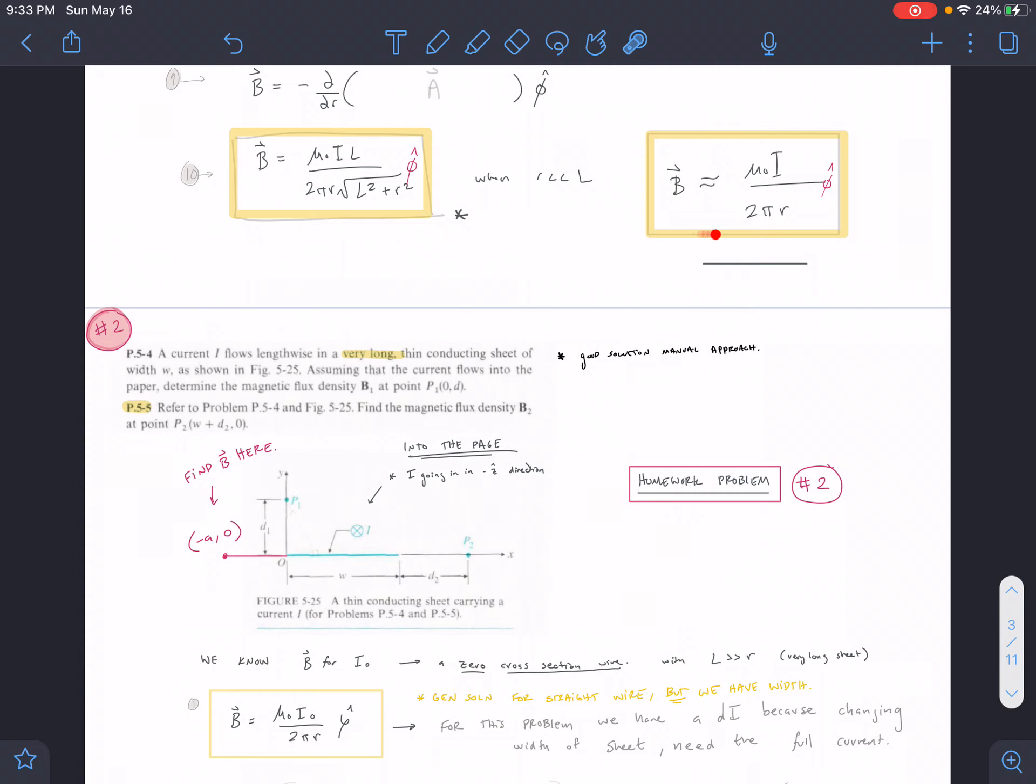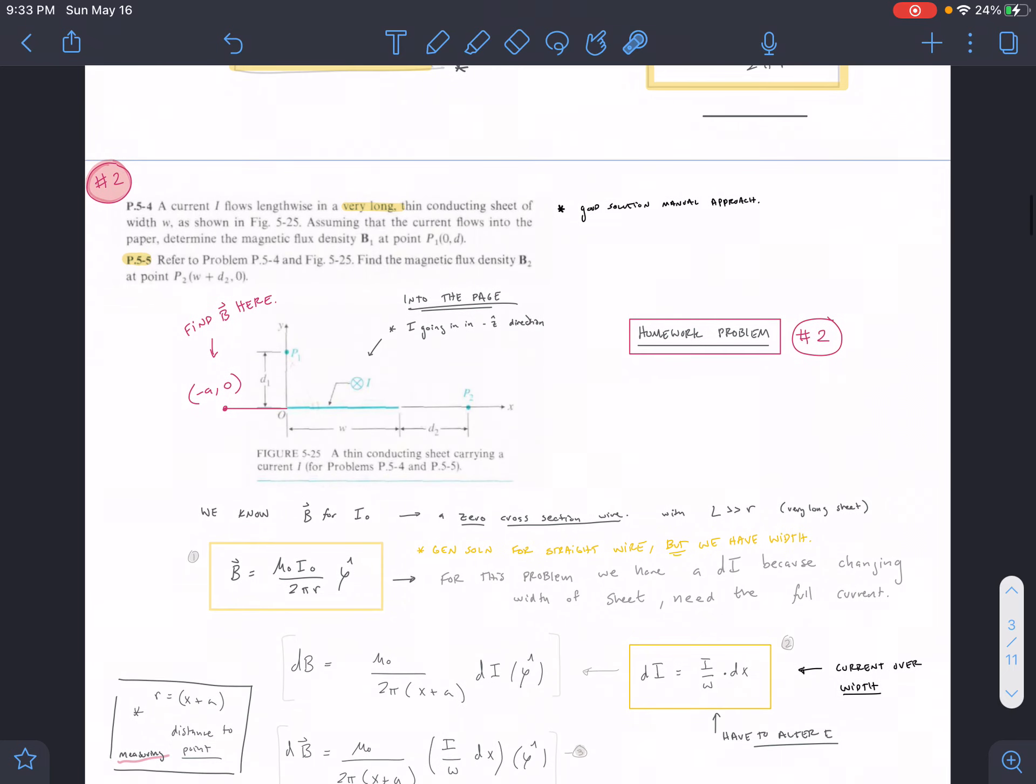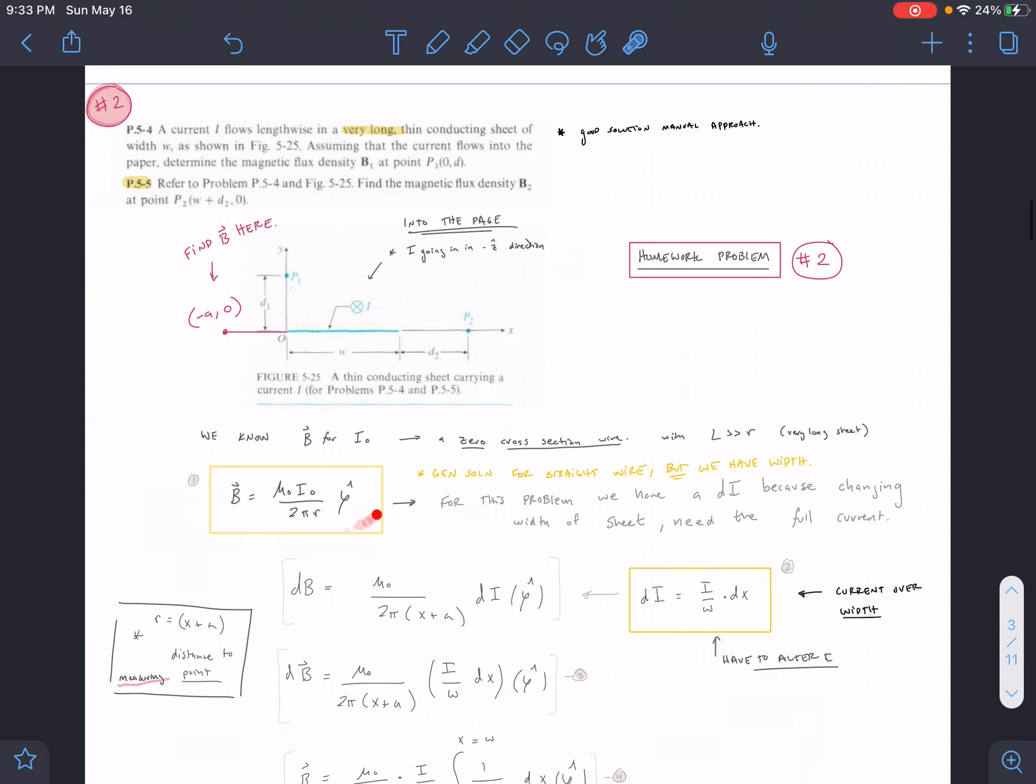We're essentially simplifying our equation and modeling our B field behavior as such. Our keyword is very long, so we're going to use this guy.